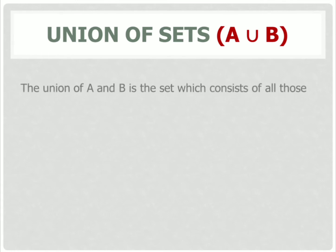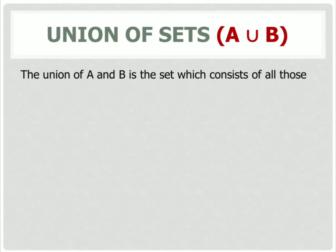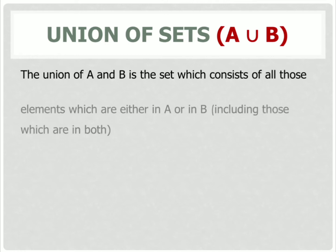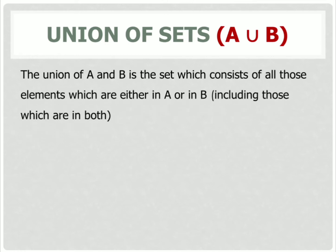First, union of sets. We represent it by A union B. If we take two sets A and B, we represent it by A union B. The union of sets A and B is the set which consists of all those elements which are either in A or in B, including those which are in both — meaning the common elements. We represent it as A ∪ B = {x : x ∈ A or x ∈ B}.